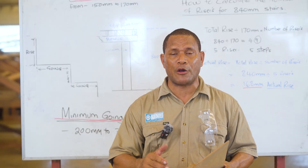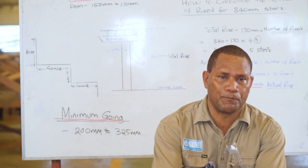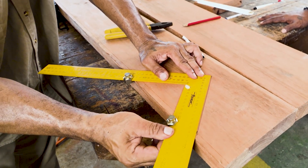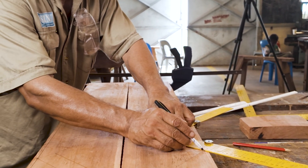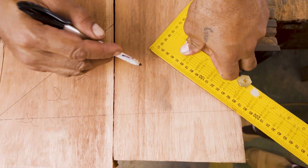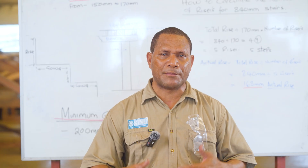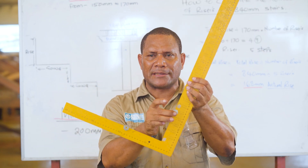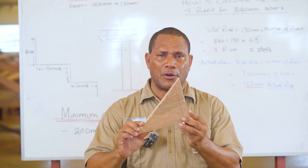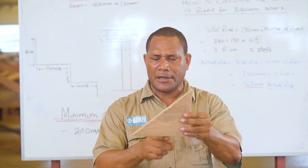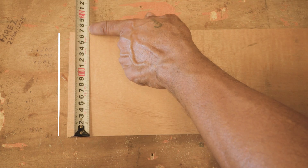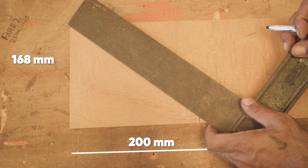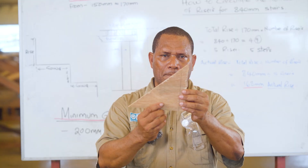First of all, I'm going to mark the rise and going on the timber. I'll show you a simple way: use a builder's square, open the nut, hold it up before you lock it — set 200 for the going and 168 millimetres for the actual rise. If you're working in a remote area and you don't have a builder's square or nut, you can take a piece of plywood or masonite and use it to mark the rise and going. Mark 168 millimetres here and 200 millimetres here. Then take a ruler, rule across, cut it — and that becomes your pattern.